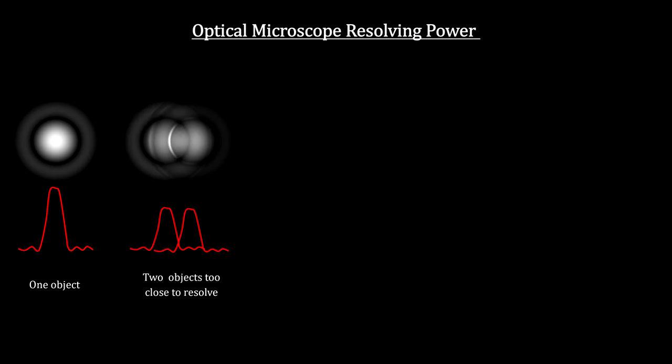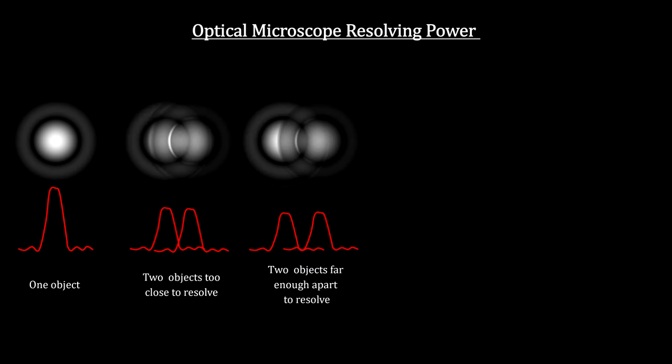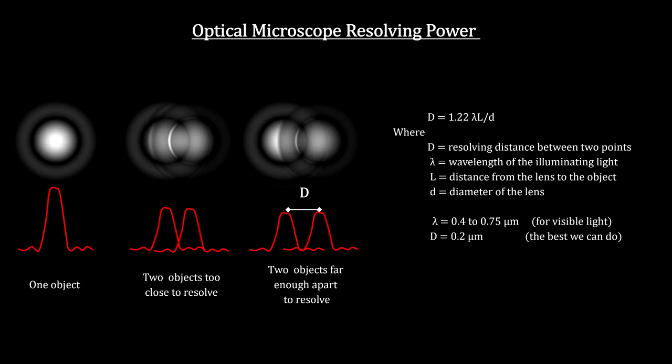The bottom line is that you can't see a thing that is smaller than the wavelength of the light used to illuminate it. If we're going to do better than 0.2 micrometers, we'll need to use something else to do the illuminating. And for that, we'll need to get a better handle on the nature of waves and particles.